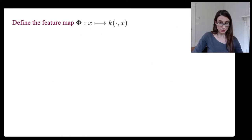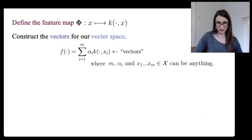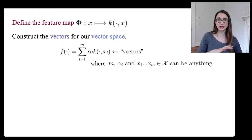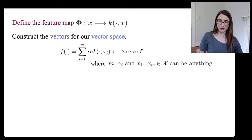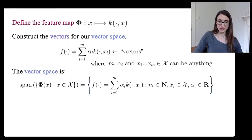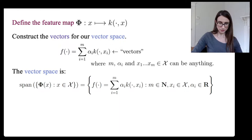From here, we construct the vectors for our vector space. They're going to be linear combinations of the kernels half-evaluated at different x_i's. You can choose whichever x_i's you want and have as many terms as you want — m can be whatever you want. The vector space is the span of these functions. Addition and scalar multiplication are well-defined, so it's a vector space.